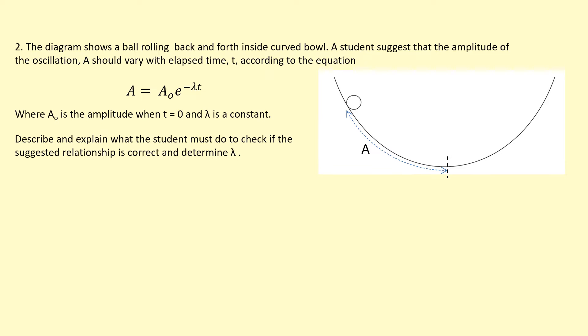In this example, we've got a ball that's rolling back and forth inside a curved bowl. A student suggests that the amplitude of the oscillation A should vary with elapsed time T according to the equation A equals A0 e to minus lambda T, where A0 is amplitude at T equals 0 and lambda is a constant. Describe and explain what the student must do to check if the suggested relationship is correct and determine lambda. A is the amplitude at different points in time.